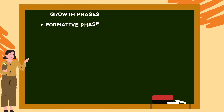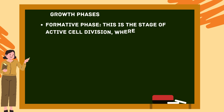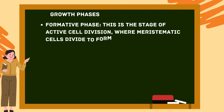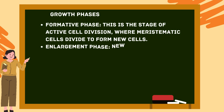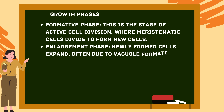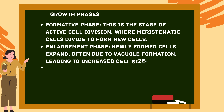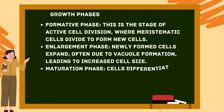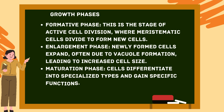Growth phases: The formative phase is the stage of active cell division, where meristematic cells divide to form new cells. In the enlargement phase, newly formed cells expand, often due to vacuole formation, leading to increased cell size. In the maturation phase, cells differentiate into specialized types and gain specific functions.